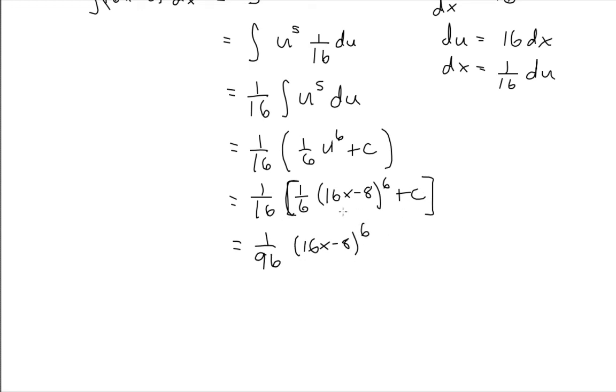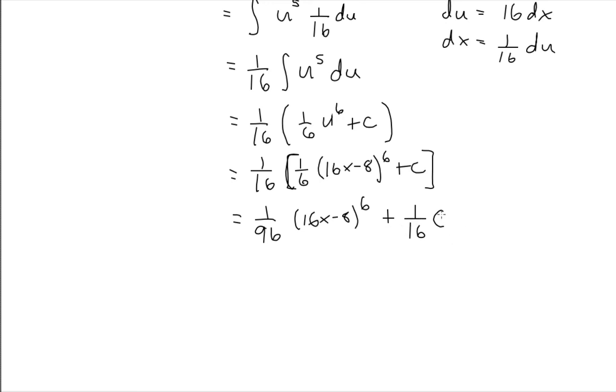Then I multiply this constant by 1 over 16, which I can write as 1 over 16 times the constant. This is some arbitrary constant—just some real number multiplying another real number, 1 over 16. So this is just another arbitrary real number. I can call it any constant I want, so I'll rename it D. You could leave it as C if you like; many textbooks do. This is my final answer.